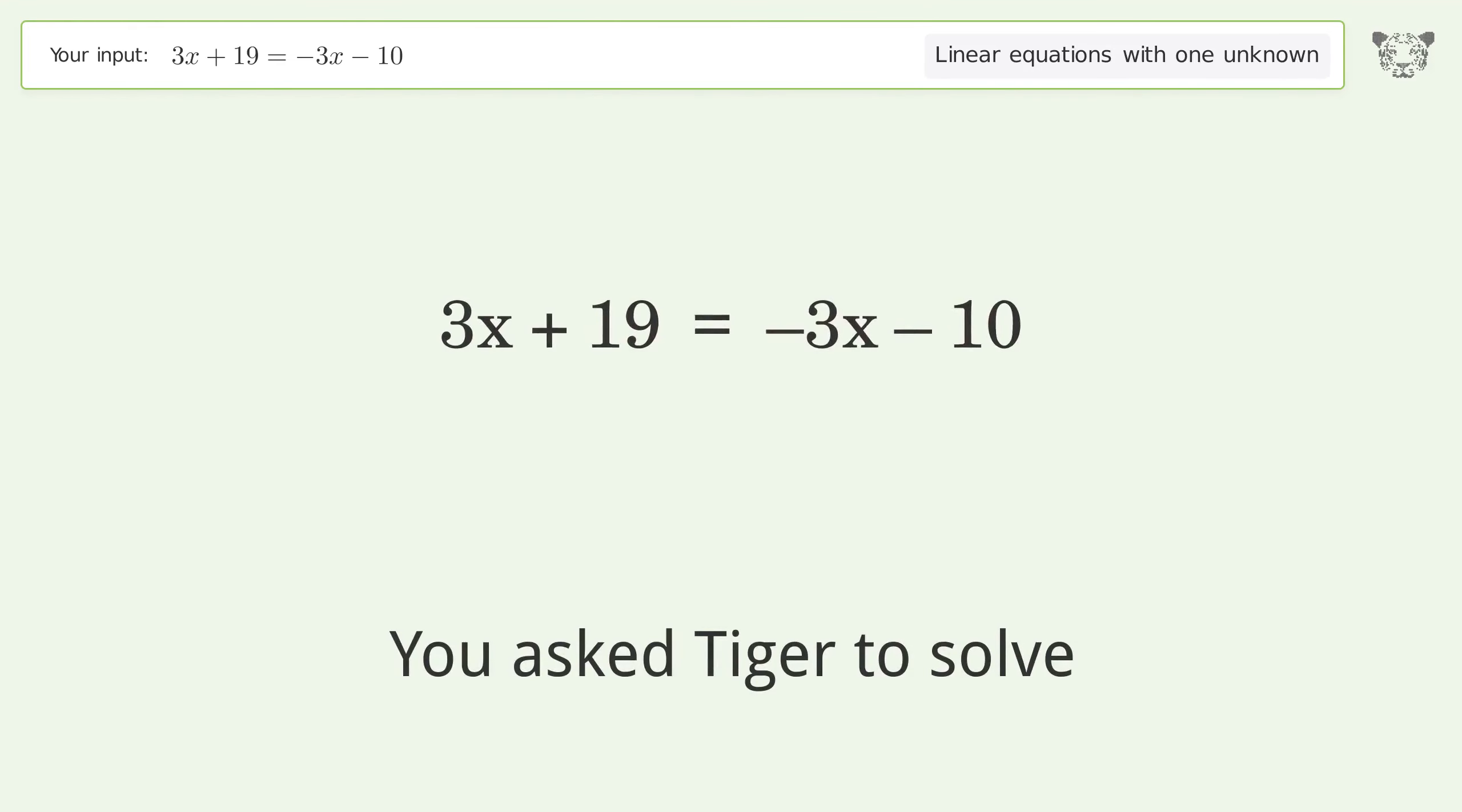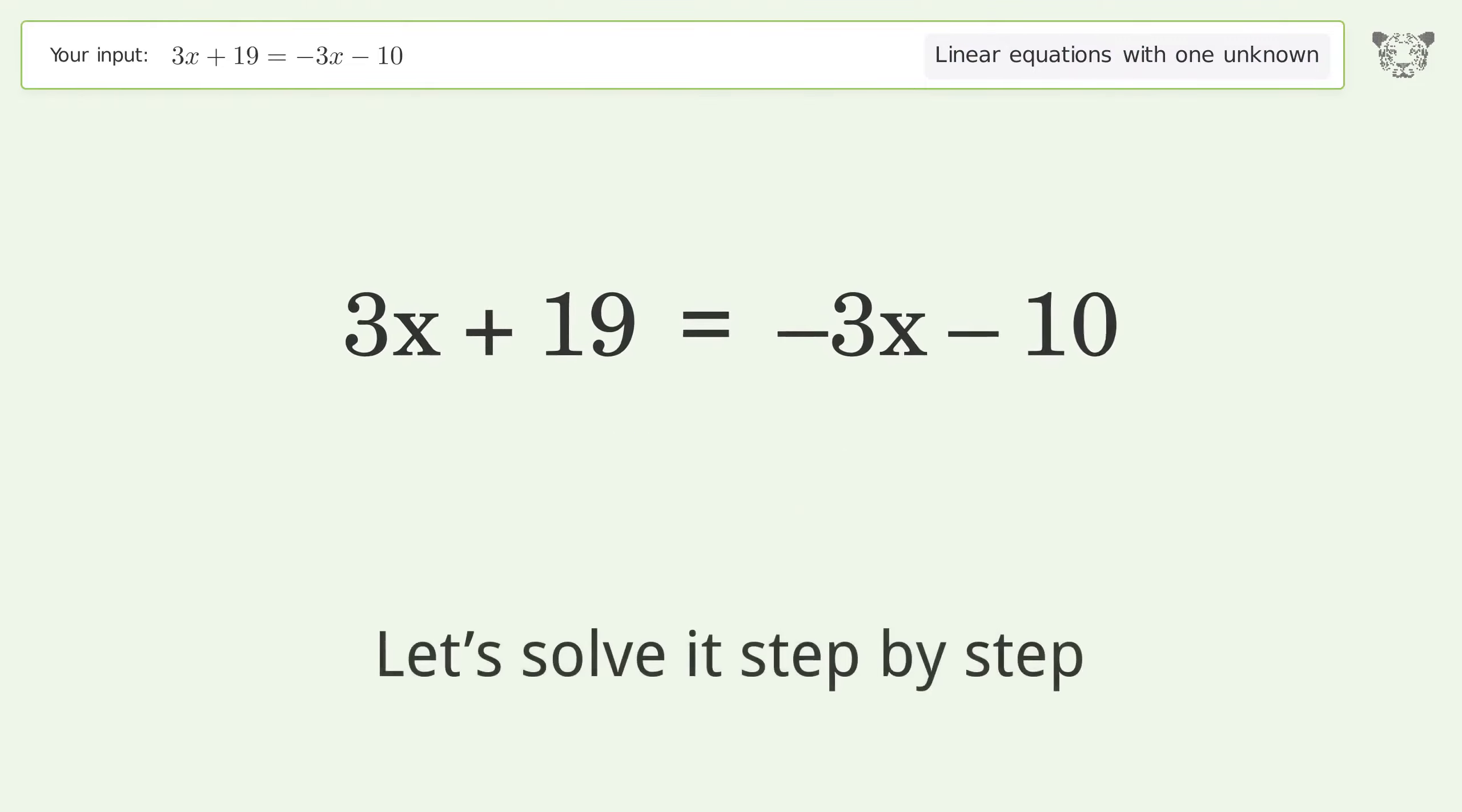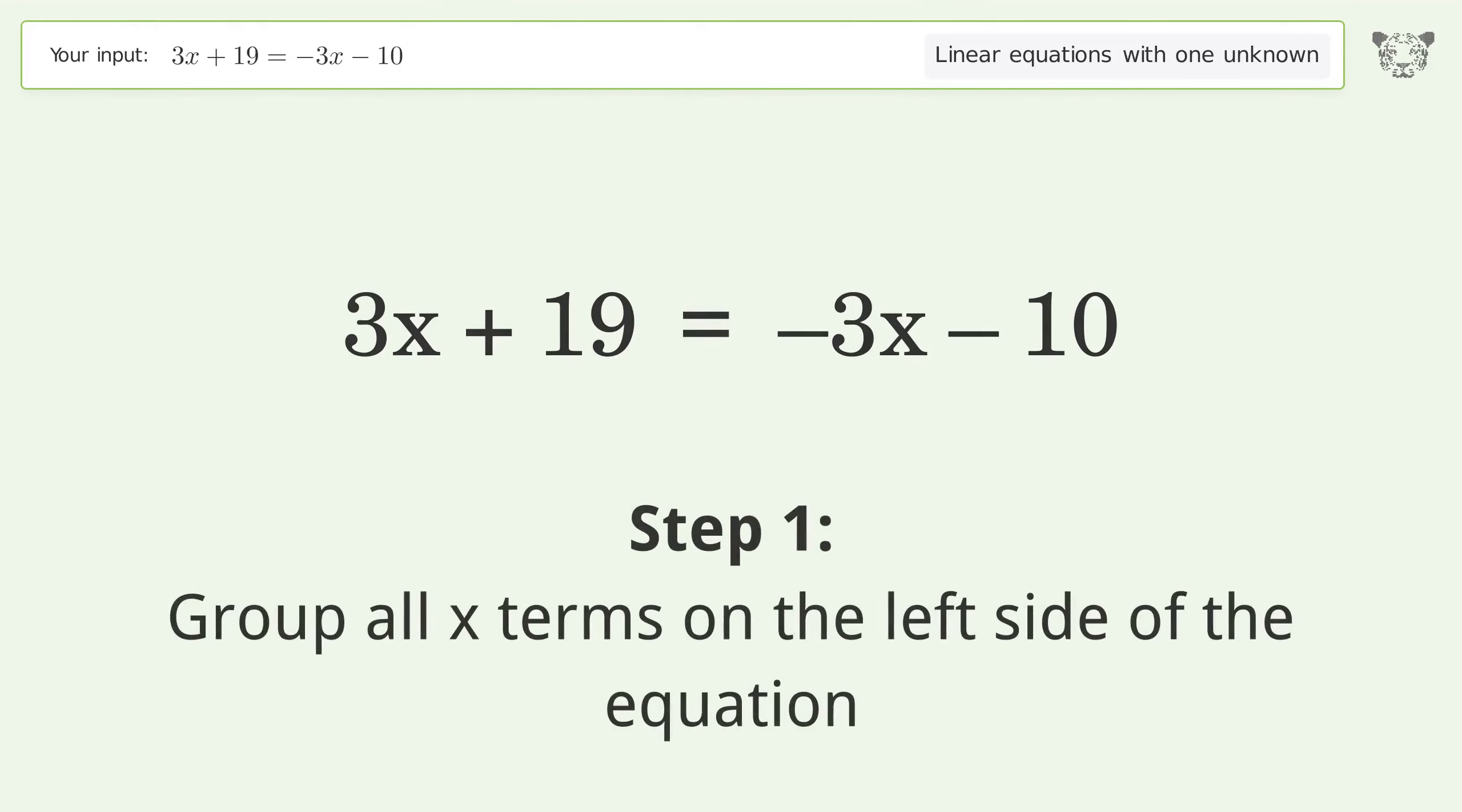You asked Tiger to solve this. This deals with linear equations with one unknown. The final result is x equals negative 29 over 6. Let's solve it step by step. Group all x terms on the left side of the equation.